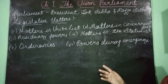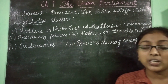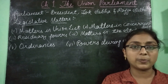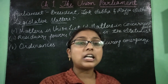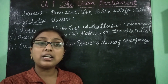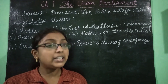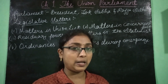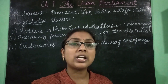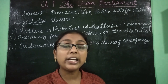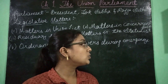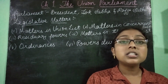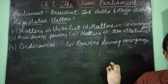The last area is powers during emergency. When a particular state's constitutional machinery breaks down, a constitutional emergency is declared in that state. At that time, all decisions regarding that state are taken by the union parliament — the union parliament can act on each and every matter, including financial matters and the state budget.